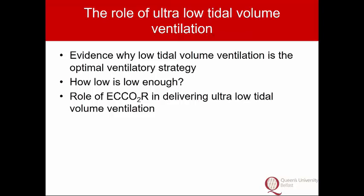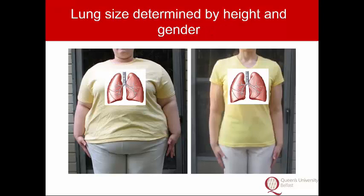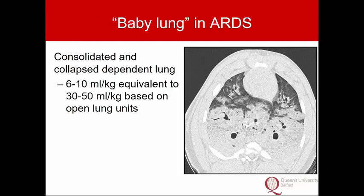A couple of fundamentals about protecting the lung: whenever we set the ventilator, we think about what the patient weighs, but it's important not to forget that lung size doesn't change with body composition — it's determined by gender and height. Even worse, setting tidal volume at 6 ml/kg assumes a normal lung, but in ARDS the majority of the lung isn't partaking in ventilation, so 6 ml/kg might actually translate into tidal volumes in the range of 30 to 50 ml/kg when you consider only open lung units.